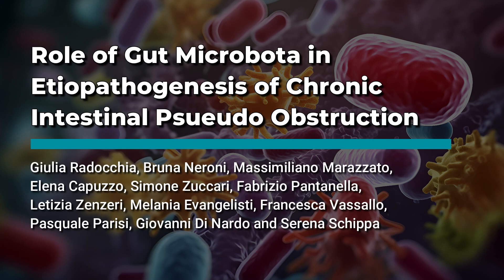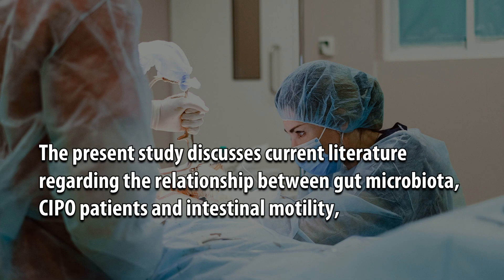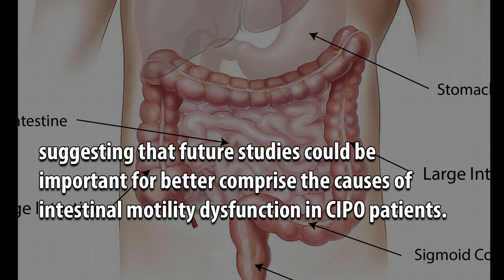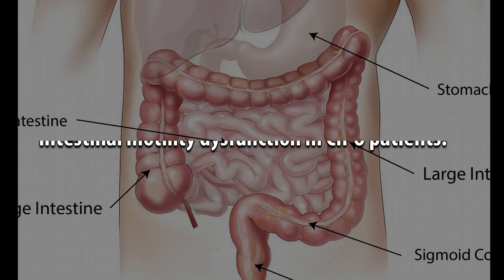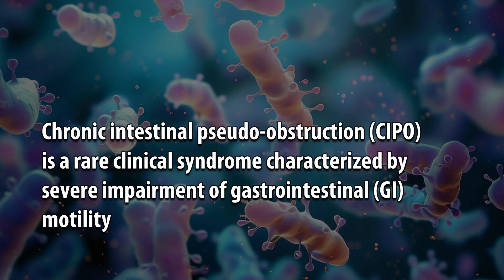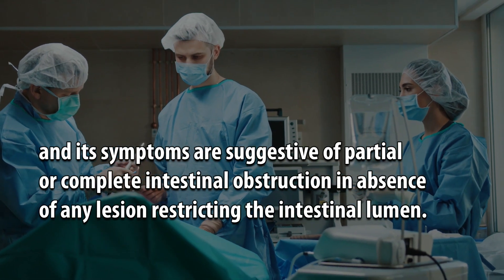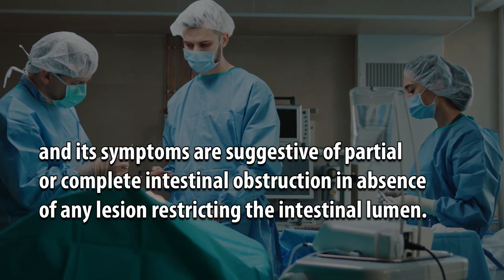Role of Gut Microbiota in Etiopathogenesis of Chronic Intestinal Pseudoobstruction. The present study discusses current literature regarding the relationship between gut microbiota, SIPO patients, and intestinal motility. Chronic Intestinal Pseudoobstruction, or SIPO, is a rare clinical syndrome characterized by severe impairment of gastrointestinal motility, with symptoms suggestive of partial or complete intestinal obstruction in the absence of any lesion restricting the intestinal lumen.